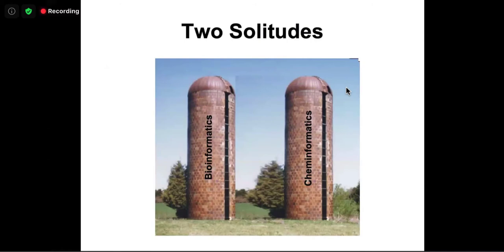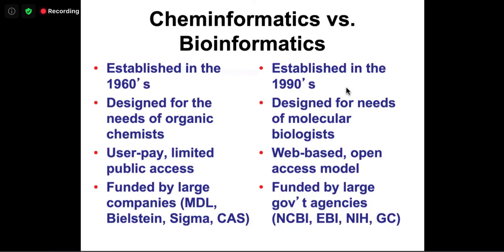I've mentioned two terms: bioinformatics and cheminformatics. Bioinformatics does computational work for biological substances — proteins, DNA, RNA. Cheminformatics is a separate field developed specifically for chemical compounds and chemistry, and it's had its own path. Cheminformatics is actually an older field, around since the 1960s, developed specifically for organic chemists. Back then, most software and computer systems were commercial.